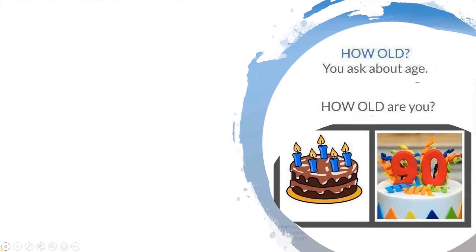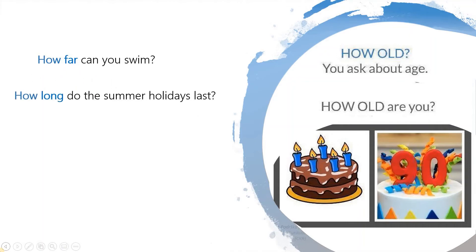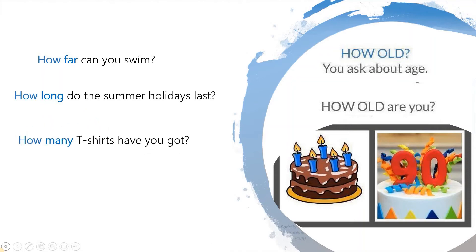We use the question word HOW OLD to ask about age. How old are you? There are many other expressions we use with HOW. HOW FAR refers to distance — for example, how far can you swim? HOW LONG refers to length and duration — how long do the summer holidays last? They last two and a half months, don't they? HOW MANY refers to quantity — how many t-shirts have you got?